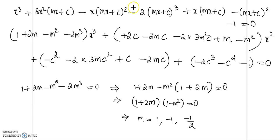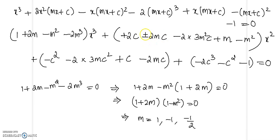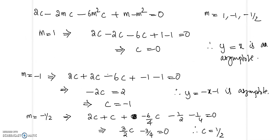Now let us substitute the value of m into the coefficient of the second highest degree term. The coefficient of x squared with m substituted will give us the value of c. If the equation vanishes throughout, we will go to the next coefficient. Let us now substitute m equal to 1 first.